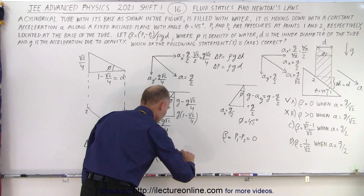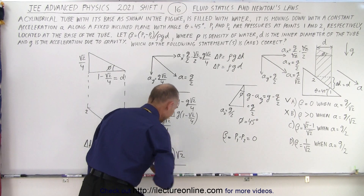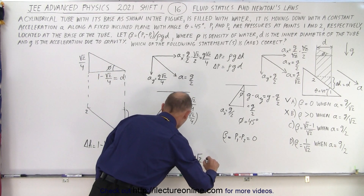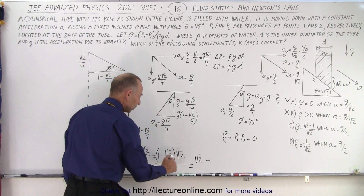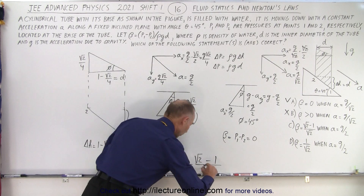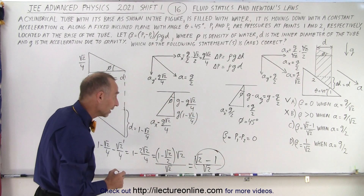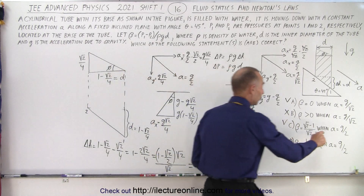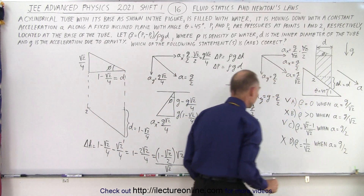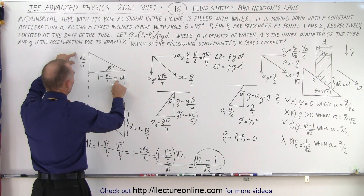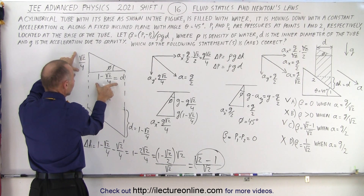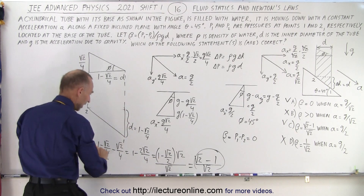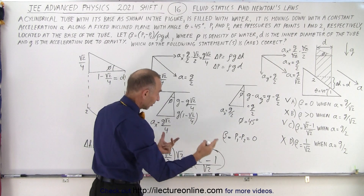Multiplying and dividing the whole expression by the square root of 2, we get: the square root of 2 minus (the square root of 2 times the square root of 2 over 2), which equals the square root of 2 minus 1, all divided by the square root of 2. This looks exactly like answer C. So C is correct and D is not. When acceleration downward is g divided by 2, the height difference gives beta matching answer C.